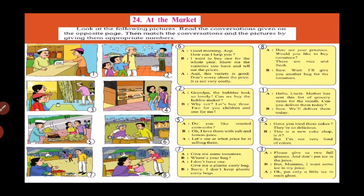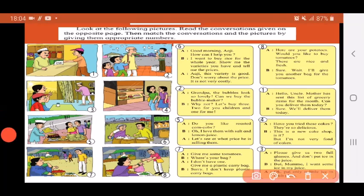Then you have to match the conversations and the pictures by giving them numbers. So first let us number all the pictures. Write the numbers in the circle next to the picture. So number them from 1 to 8.